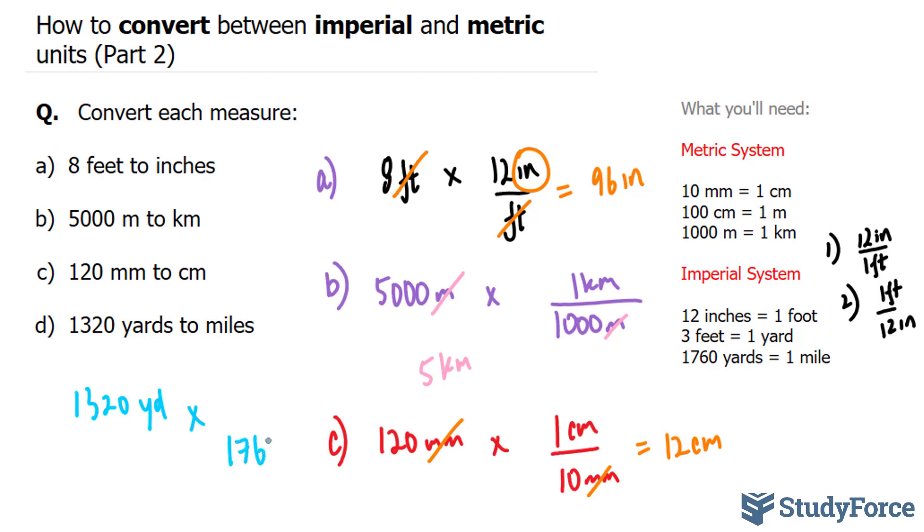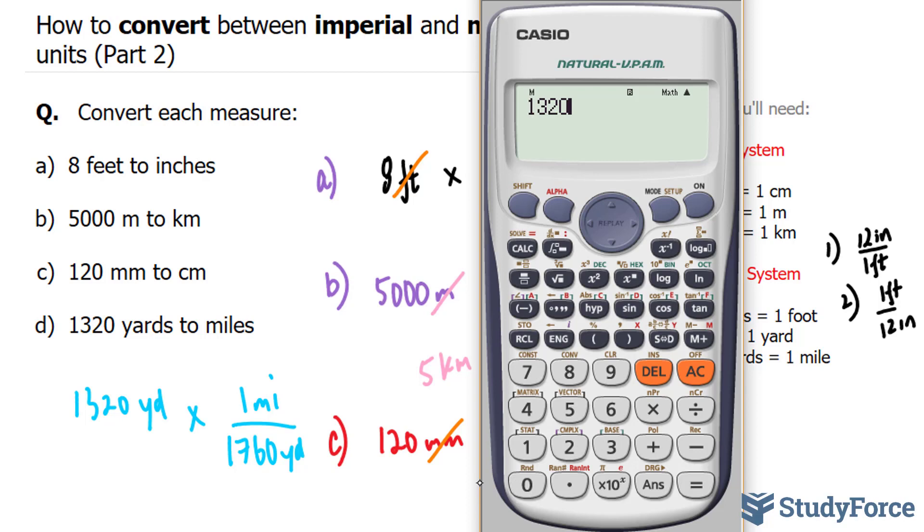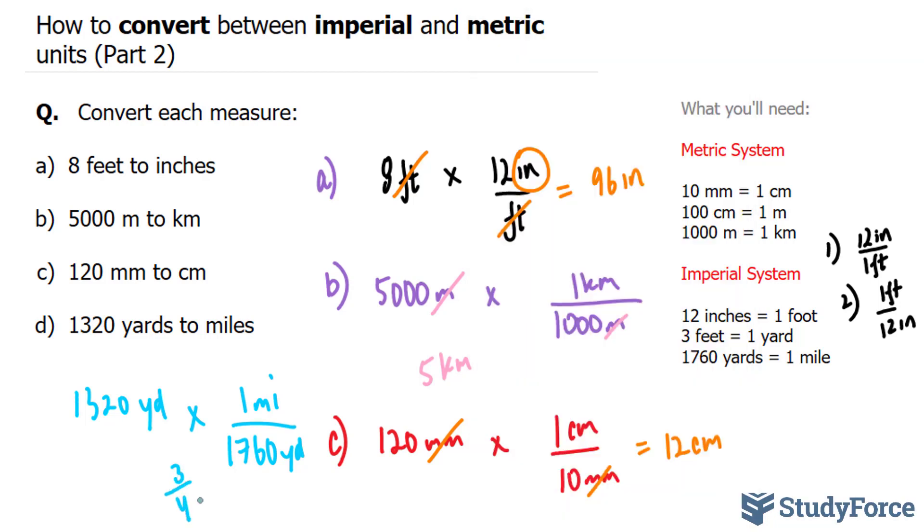So we have 1760 yards at the bottom, and at the top we have 1 mile. Multiplying this out on our calculator, 1320 times 1 divided by 1760 gives us an answer of 3 over 4 miles.